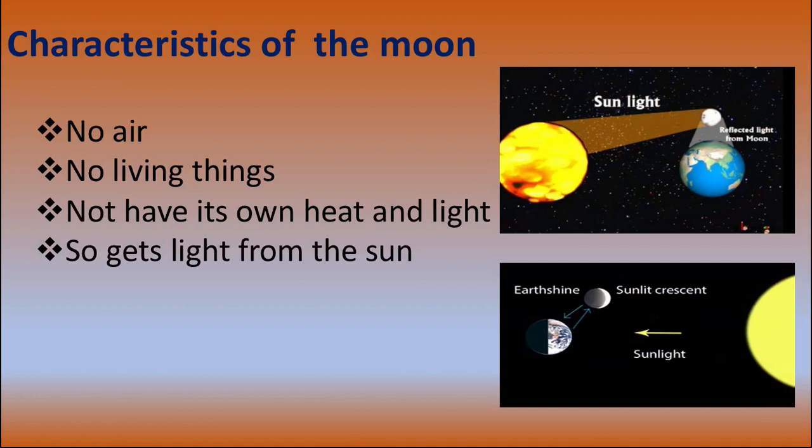The moon rotates on its own axis at the same rate as its orbit around the Earth. The Earth is moving on its own orbit. So we see the different parts of the moon lit by the sun as the moon travels on its orbit.